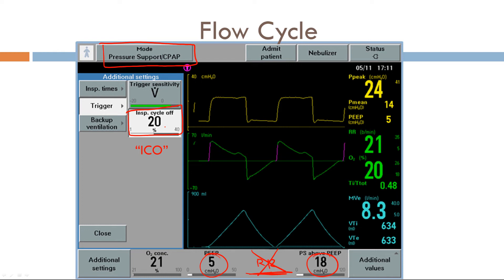Again, the cycle variable in pressure support is flow. So we look at the peak inspiratory flow here. This is what we regard 100%. Once the flow reaches this set amount or 20% of your peak inspiratory flow, their cycling of the breath means you stop inspiration.